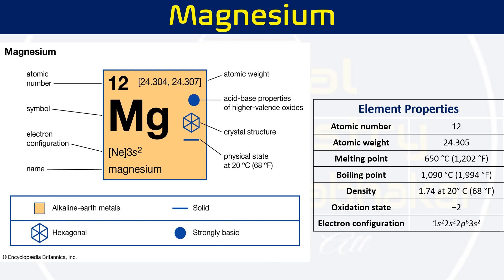These are the basic chemical properties of magnesium. Its atomic number is 12, its symbol is Mg, and when talking about electronic configurations we write the nearest inert gas composition. Atomic weight is 24.30, with a melting point, boiling point, and density listed. The most commonly present oxidation state is plus 2, and it is one of the alkaline earth metals.